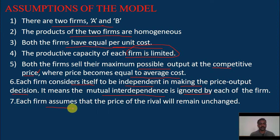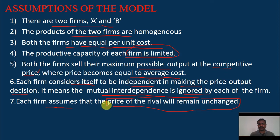Each firm assumes that the price of the rival will remain unchanged — the same assumption seen in the other two models. The rivals are expected to keep their price fixed, thinking that adjustments will continue on the other side.